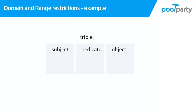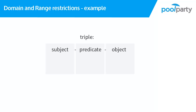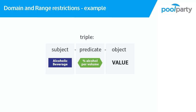Going back to our example, let's look at the contains relation. We said that cocktails can contain beverages. The domain of a relation is the class in the subject position — for the contains relation, this would be the cocktail class. The range is the class in the object position — the contains relation would have the beverage class in its range. For the attribute percent alcohol per volume, we can build a triple that says alcoholic beverage, percent alcohol per volume, value. The value does not have a class, so the attribute percent alcohol per volume only has a domain: the alcoholic beverage class.